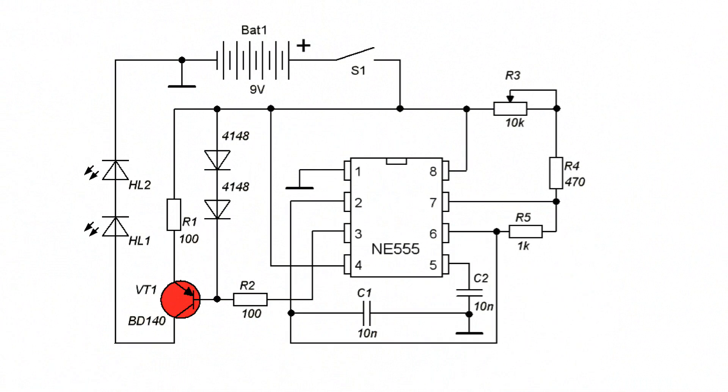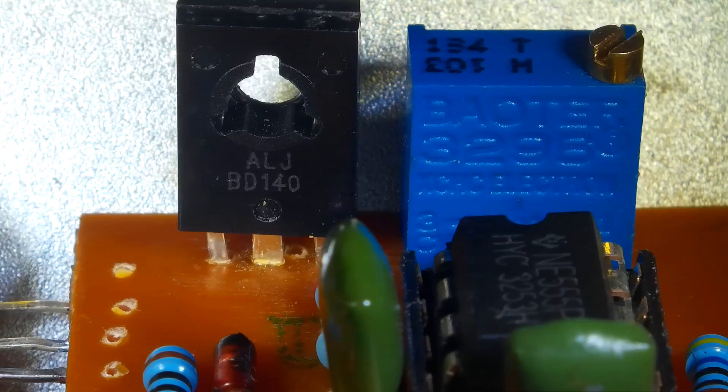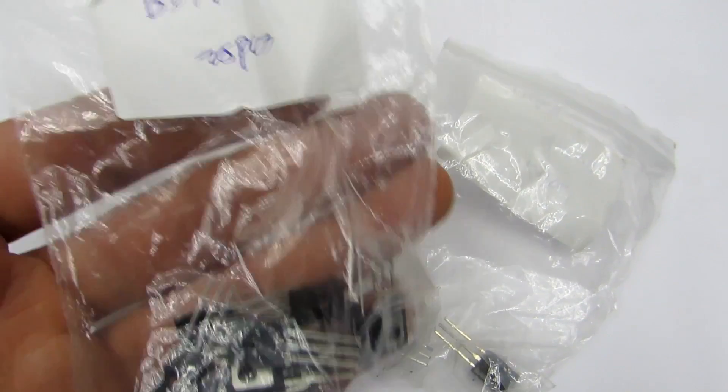The timer output is loaded on a PNP structure bipolar transistor. I use the medium power BD140 transistor. The choice is due to the fact that I have a lot of these transistors.